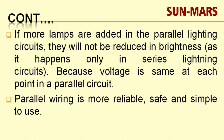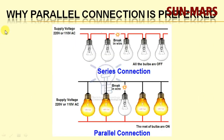If a connection is broken or a lamp is disconnected, you can replace it without turning off the entire circuit from the main switch. In parallel, if one wire is broken and 5 lamps are in the circuit, that one is closed but the rest — 4 lamps — remain in working condition.